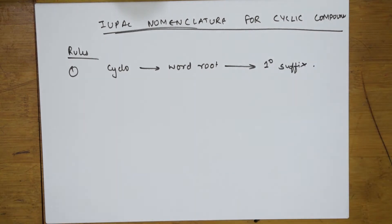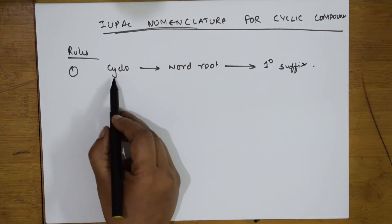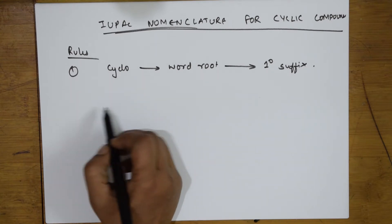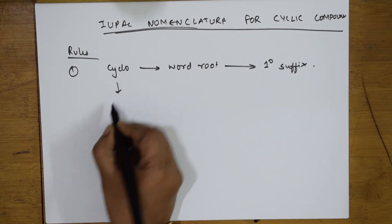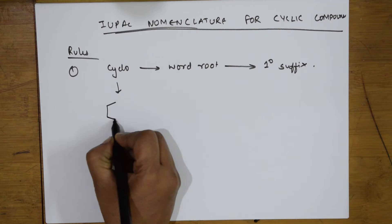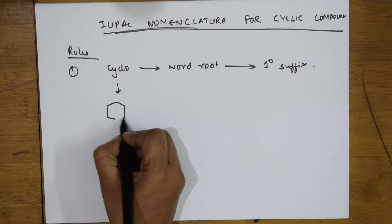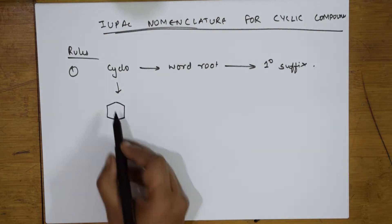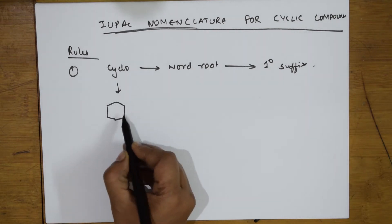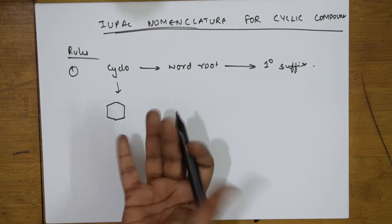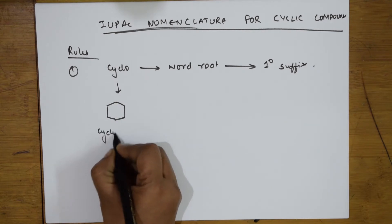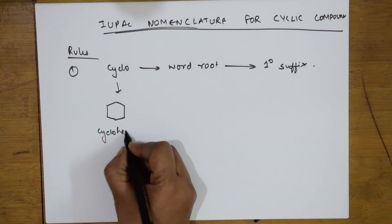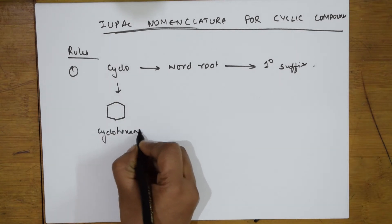A cyclo compound is a polygon which you are naming. For example, this cyclo compound has 1, 2, 3, 4, 5, 6 carbons — it is cyclohexane.